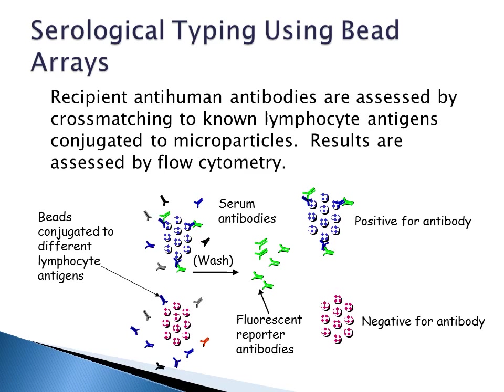You can also do serological-based typing using bead arrays, where recipient anti-human antibodies are assessed by cross matching to known lymphocyte antigens conjugated to microparticles, and you assess the results using flow cytometry. You have beads conjugated to different lymphocyte antigens, serum antibodies, and fluorescent reporter antibodies. If your antibodies are recognized, you'll get attachment and a positive reaction. If not, the reaction will be negative.